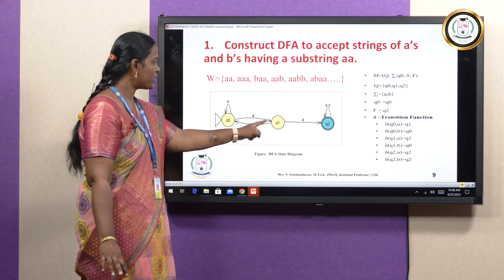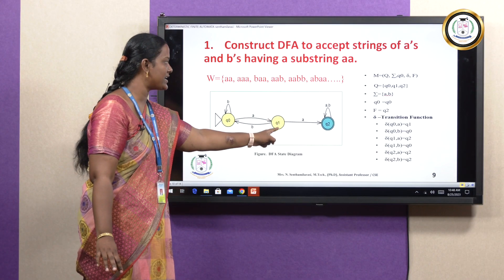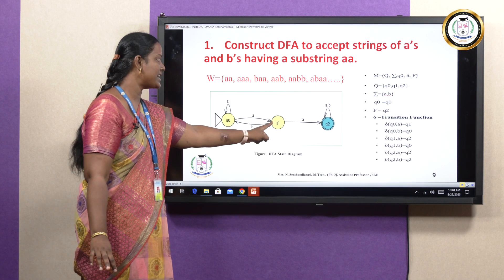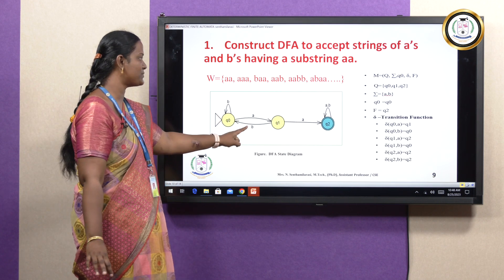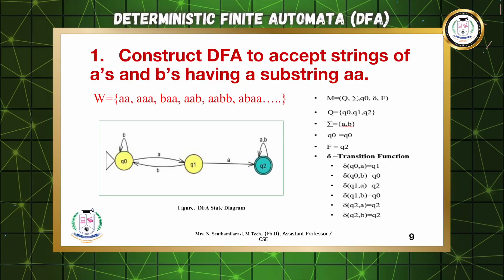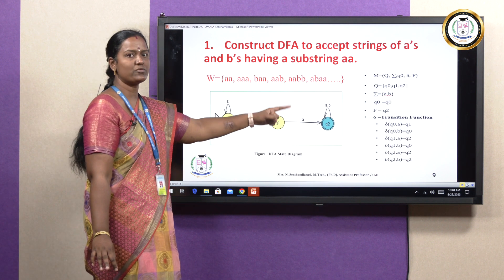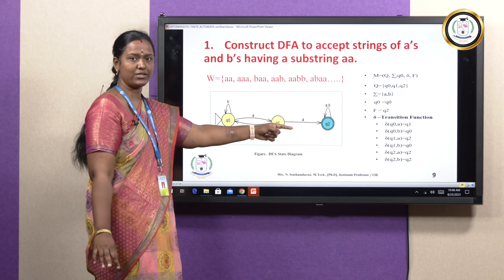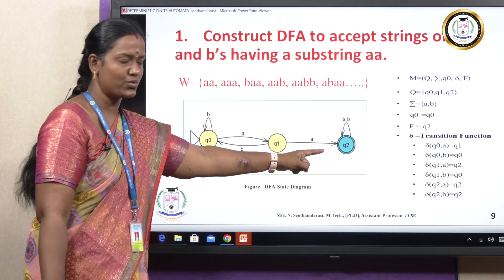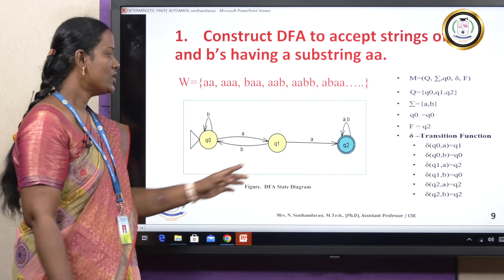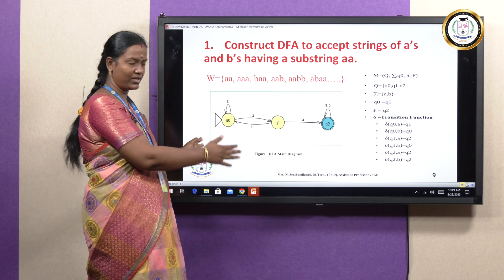Next, from Q1: on input A it moves to Q2. On input B, it moves back to Q naught. Check the string BAA — it is accepted. Now Q2: once we are at Q2, AA has been found. On both A and B as input, it stays as a self-loop at Q2. So this is the complete DFA transition diagram.